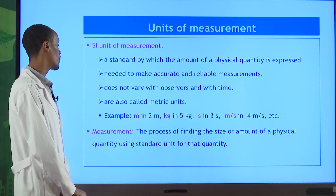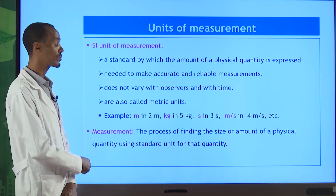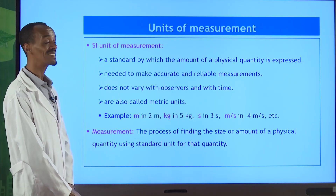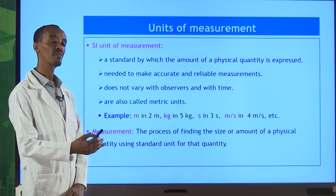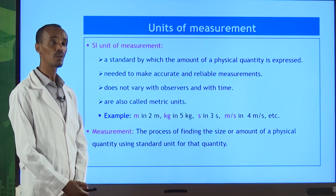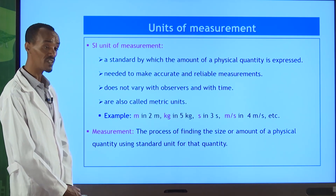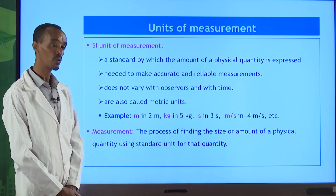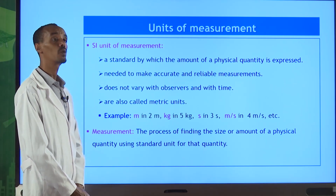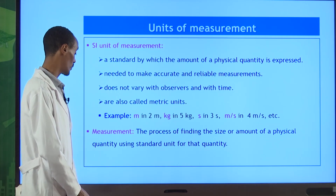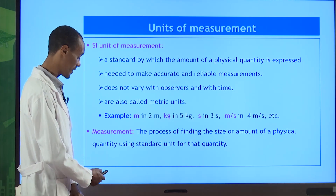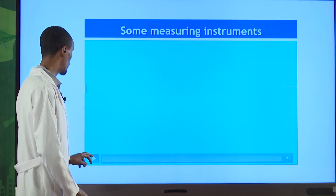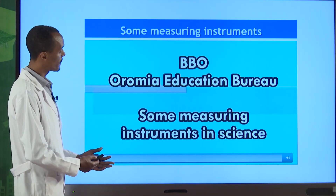Measurement is the process of finding the size or amount of a physical quantity. When measuring, you must have a standard unit to compare against. We need an instrument with a unit on it. A measuring device and a unit are both required for any measurement.